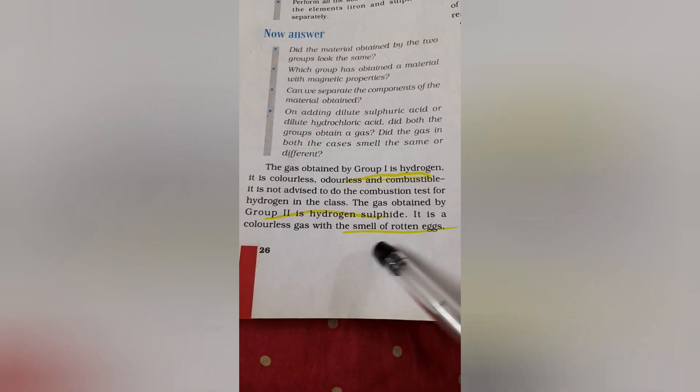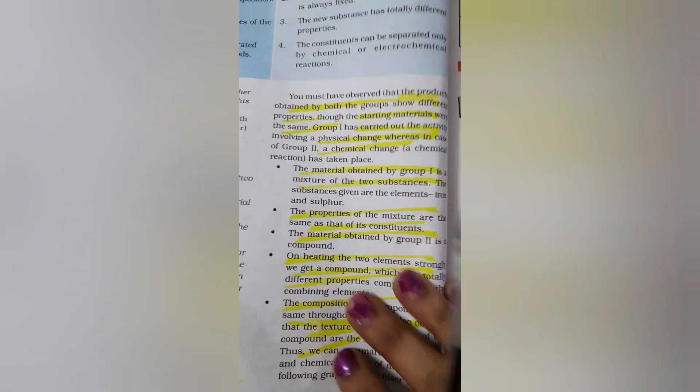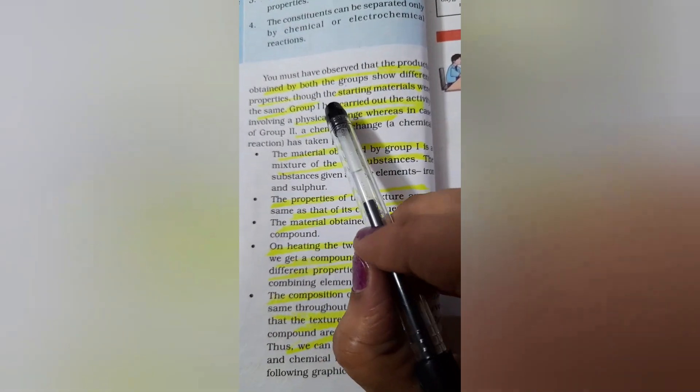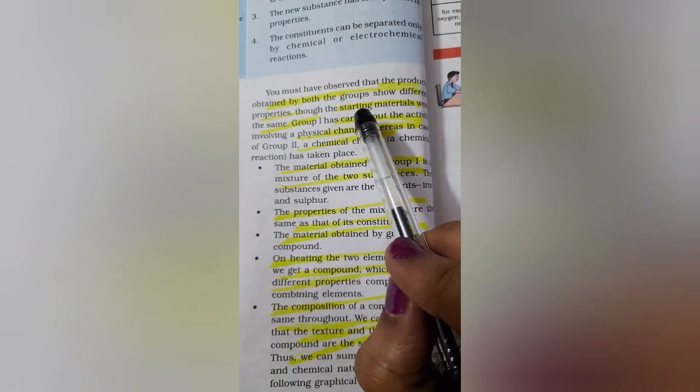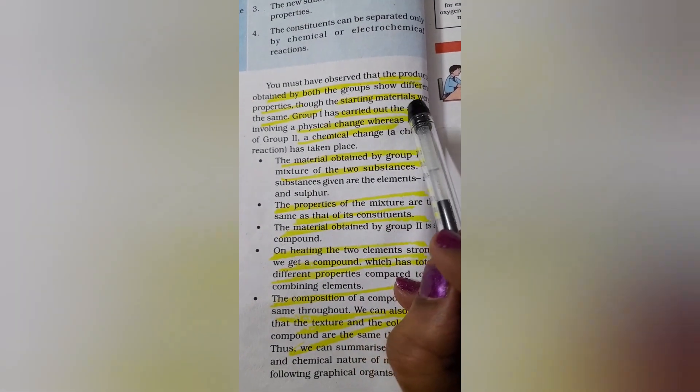As far as the second group is concerned you get hydrogen sulfide gas. First case it is hydrogen, second case it is hydrogen sulfide which is a colorless gas with the smell of rotten eggs. That is the characteristic smell of hydrogen sulfide, it has the smell of rotten eggs by which you can easily identify it anywhere when you do the test.